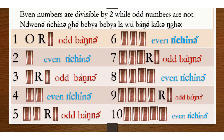7 is not divisible by 2, so it is odd. 8 is divisible by 2, so it is even. 9 is not divisible by 2, so 9 is odd.